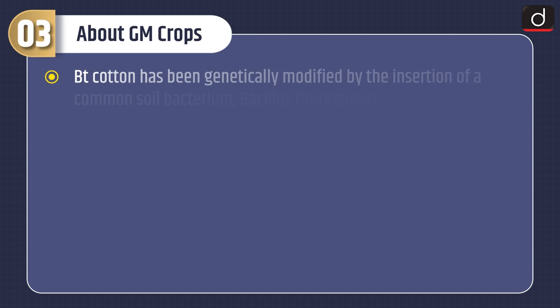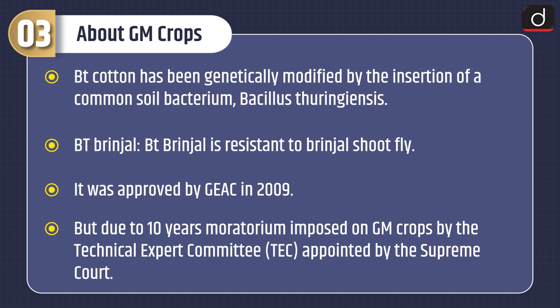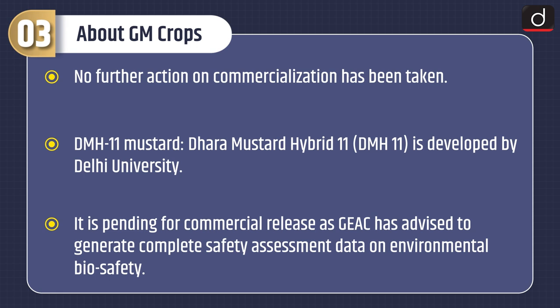Bt cotton has been genetically modified by the insertion of a common soil bacterium, Bacillus thuringiensis. Bt Brinjal is resistant to brinjal shoot fly and was approved by GEAC in 2009, but due to a 10-year moratorium imposed on GM crops by the Technical Expert Committee appointed by the Supreme Court, no further action on commercialization has been taken. DMH-11 mustard, or Dhara Mustard Hybrid 11, is developed by Delhi University and is pending commercial release, as GEAC has advised generating complete safety assessment data on environmental biosafety.